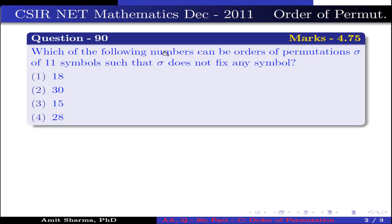Question is: which of the following numbers can be order of permutation sigma of 11 symbols such that sigma does not fix any symbol? Option 1: 18, option 2: 30, option 3: 15, option 4: 28.